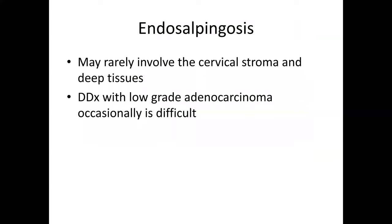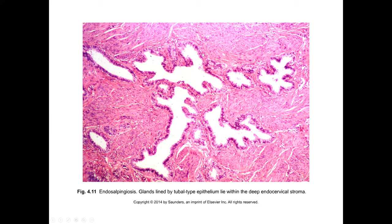Endosalpingiosis rarely can involve the endocervical stroma and deeper tissues, and of course it's benign. Differentiating it from low-grade carcinoma can occasionally be difficult, especially if there's overlying endocervical carcinoma or adenocarcinoma in situ. Here we see tubal metaplastic-type epithelium in a location not connected to the mucosa, so it can look just like tubal metaplasia but involve the deep stromal tissues, particularly common in deeper tissues.